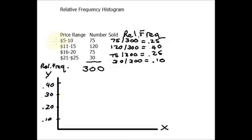Because I have already drawn a relative frequency table here, my data is already sorted into bins of 4. So I am just going to draw these categories down here, 5 to 10 dollars.